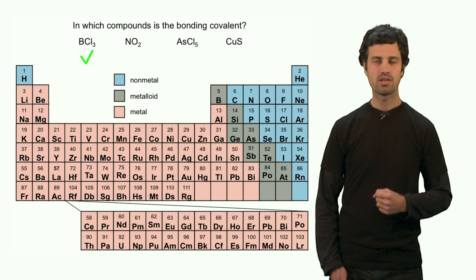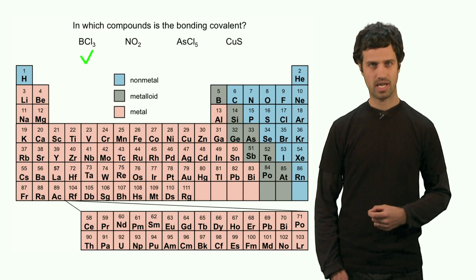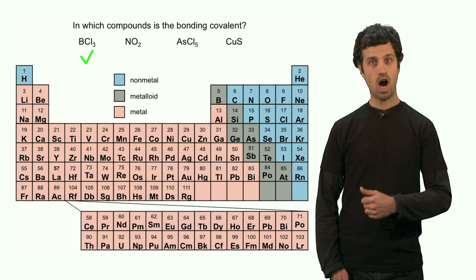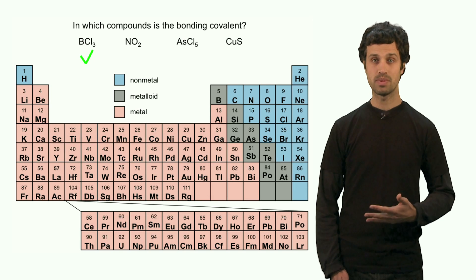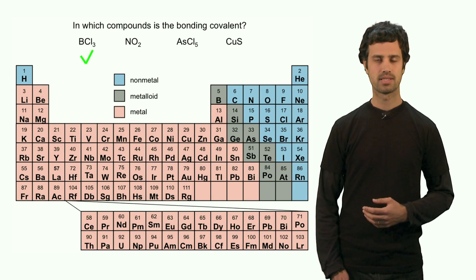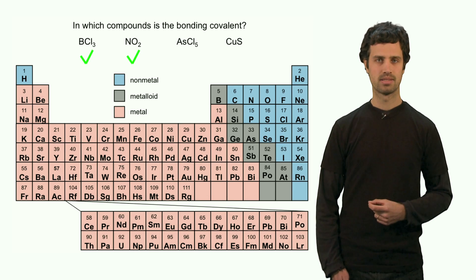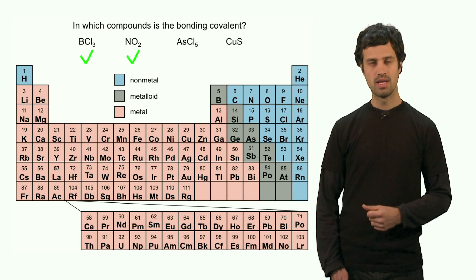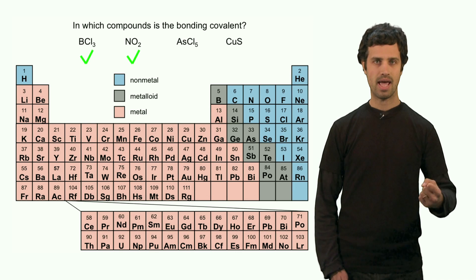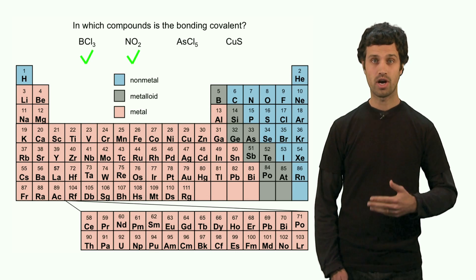The second compound is nitrogen dioxide. Both nitrogen and oxygen are nonmetals, which means the linkages are covalent. The third one is arsenic pentachloride. Chlorine is a nonmetal and arsenic is a metalloid. Both are not metals, which means that the linkages here are again covalent.